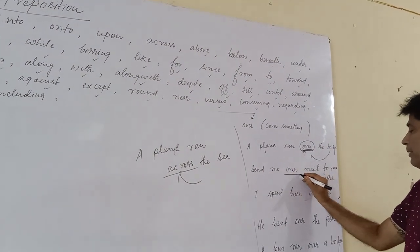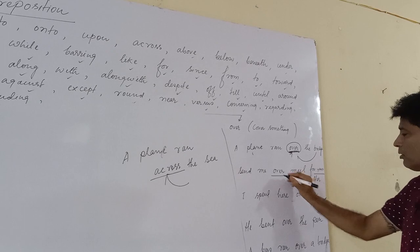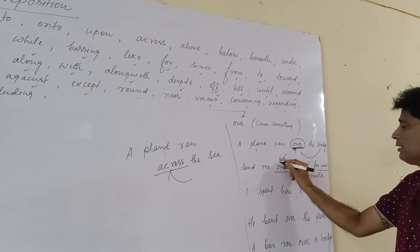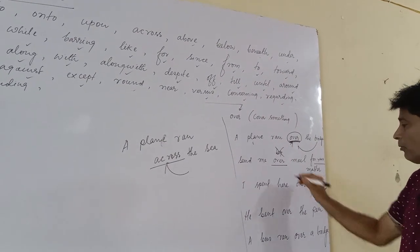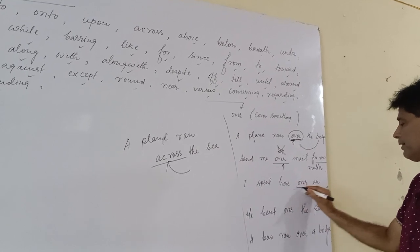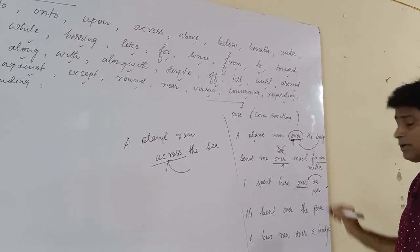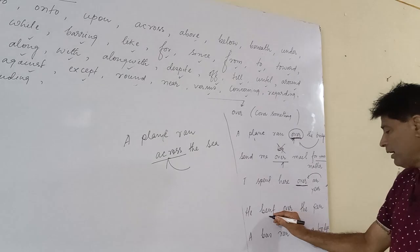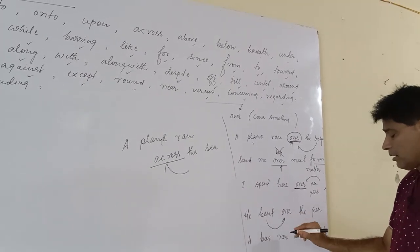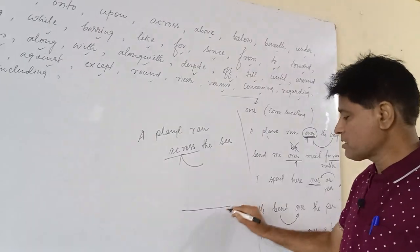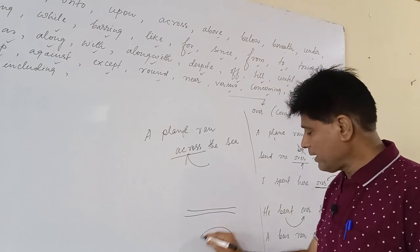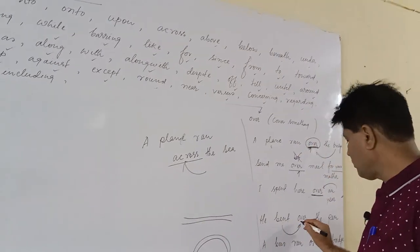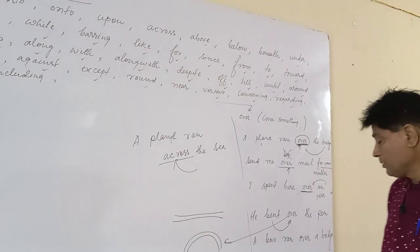Send me over mail for your matter, not by mail will be incorrect, over mail will be correct. I spent here over a year, it depends more than a year. He bent over the pen. I mean pen was in straight, but you make it like that. So in that condition, over will be correct.